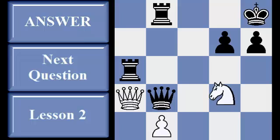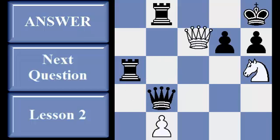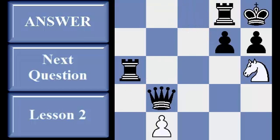White mates with the classic smothered mate combination, forces the king into a discovered double check, and here ignores taking the queen for the bigger prize, forcing the black pieces to lock its own king in the corner for the knight to mate with knight f7.